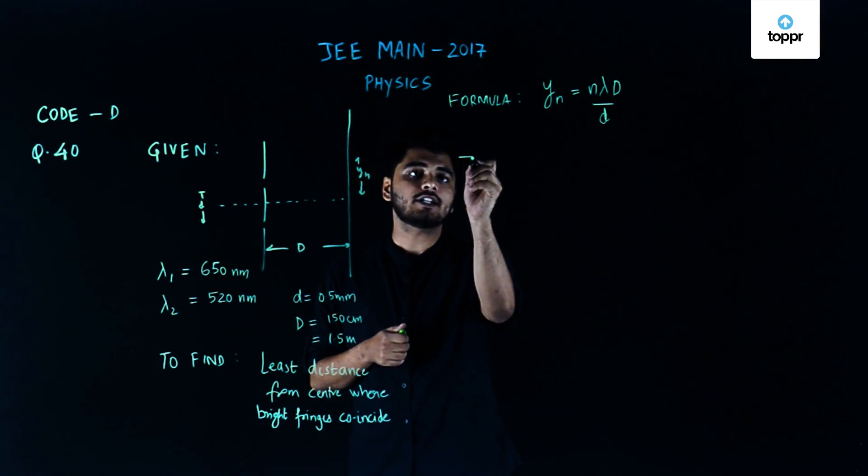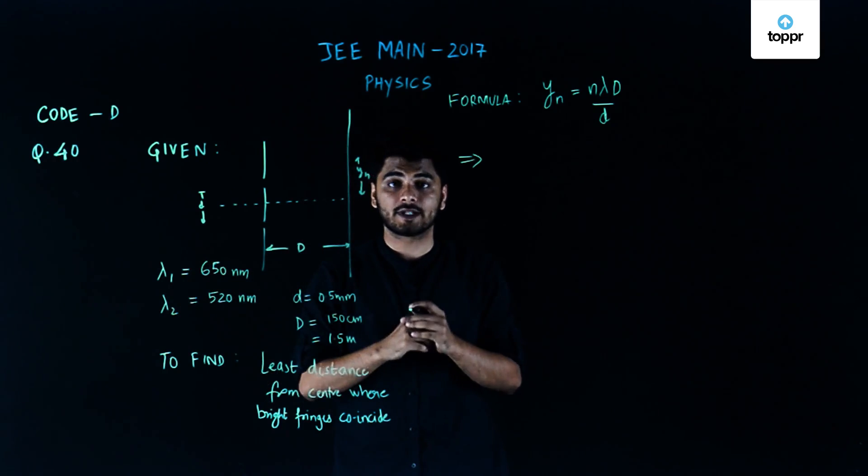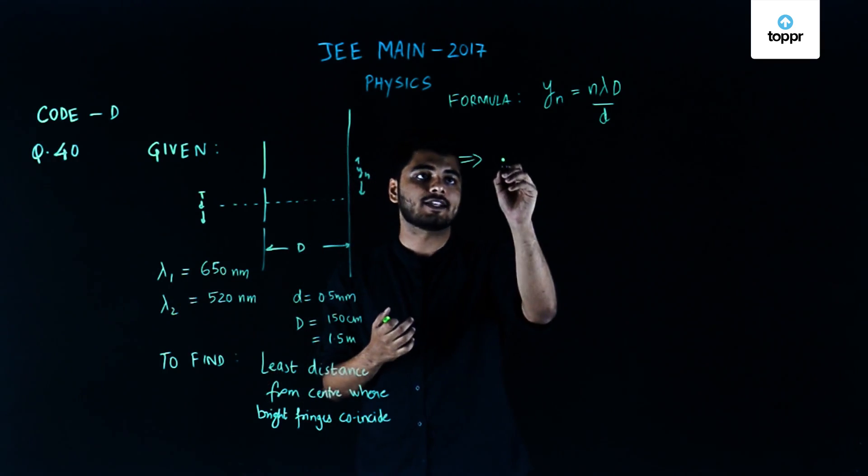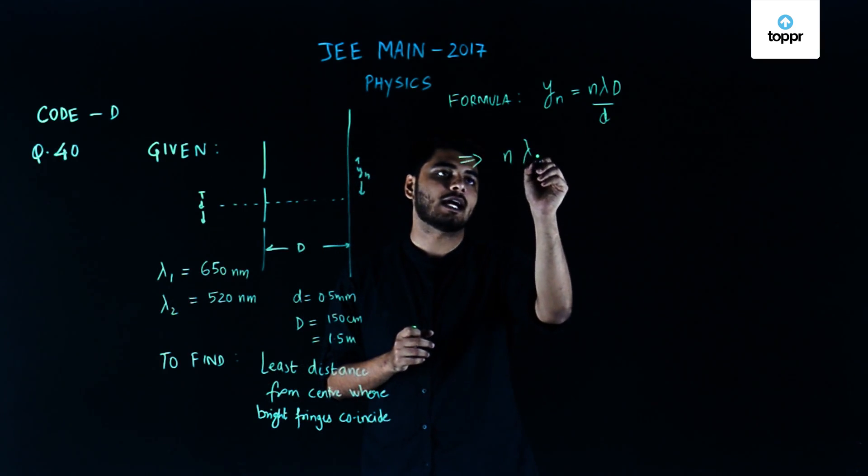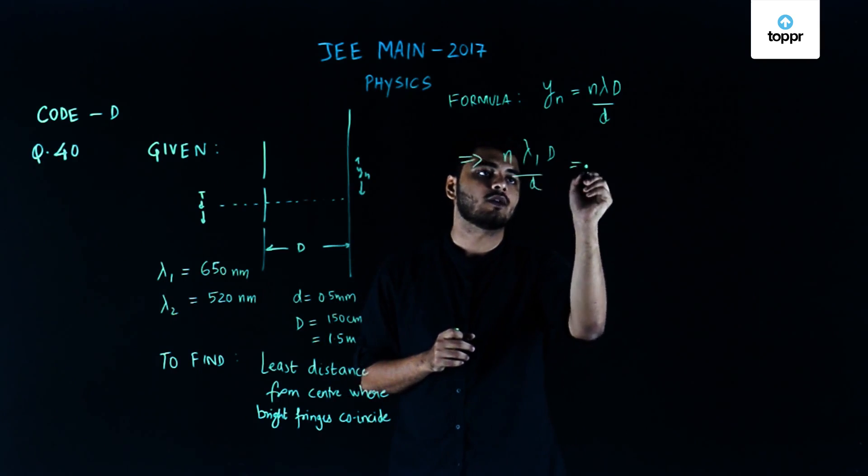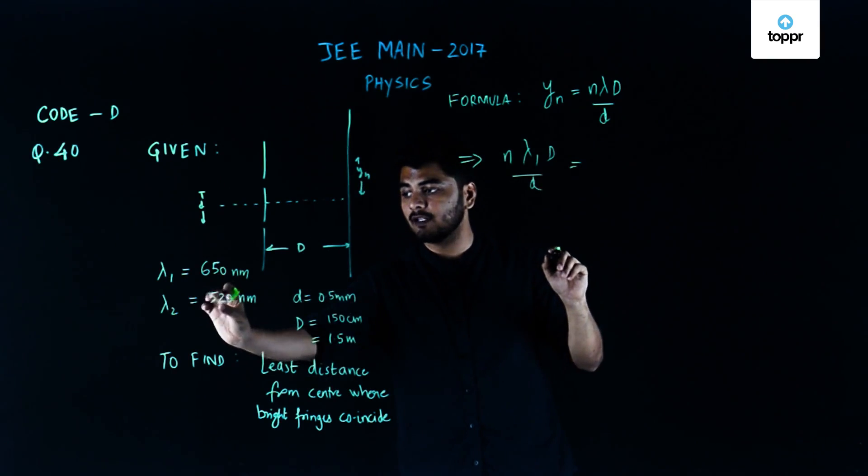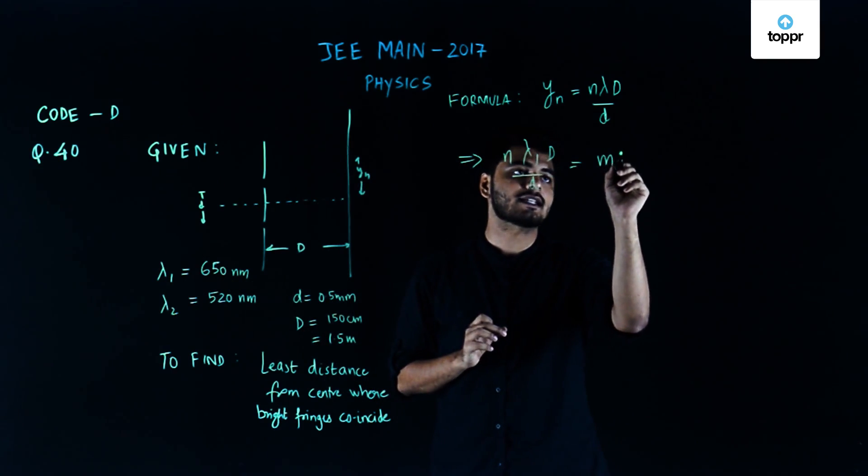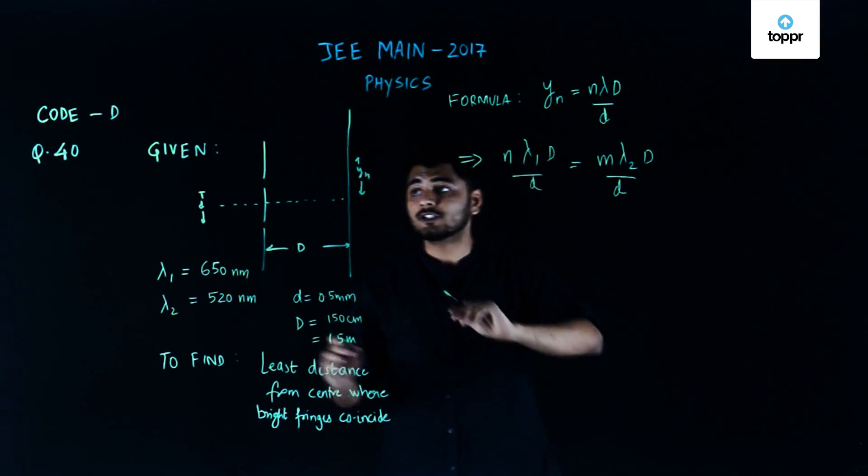In order for both of these wavelengths to produce a common bright fringe they must coincide. We're assuming the nth maxima due to 650 nanometers, lambda 1 D by d, coincides with the y position of the mth maxima due to lambda 2, that is lambda 2 times m times D by d. These two must coincide.